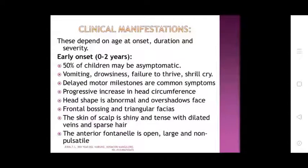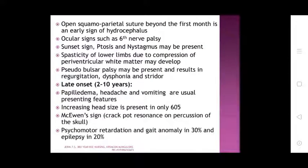Clinical manifestations depend on age of onset. Early onset (1–2 years): 50 percent of children may be asymptomatic; others show vomiting, drowsiness, and failure to thrive. A shrill cry and delayed motor milestones are common. Progressive increase in head circumference; head shape is abnormal with frontal bossing and triangular facies. The scalp skin is thin and tense with dilated veins and sparse hair. The anterior fontanel is open and large, pulsatile; open, separated sutures beyond the first month are an early sign of hydrocephalus.